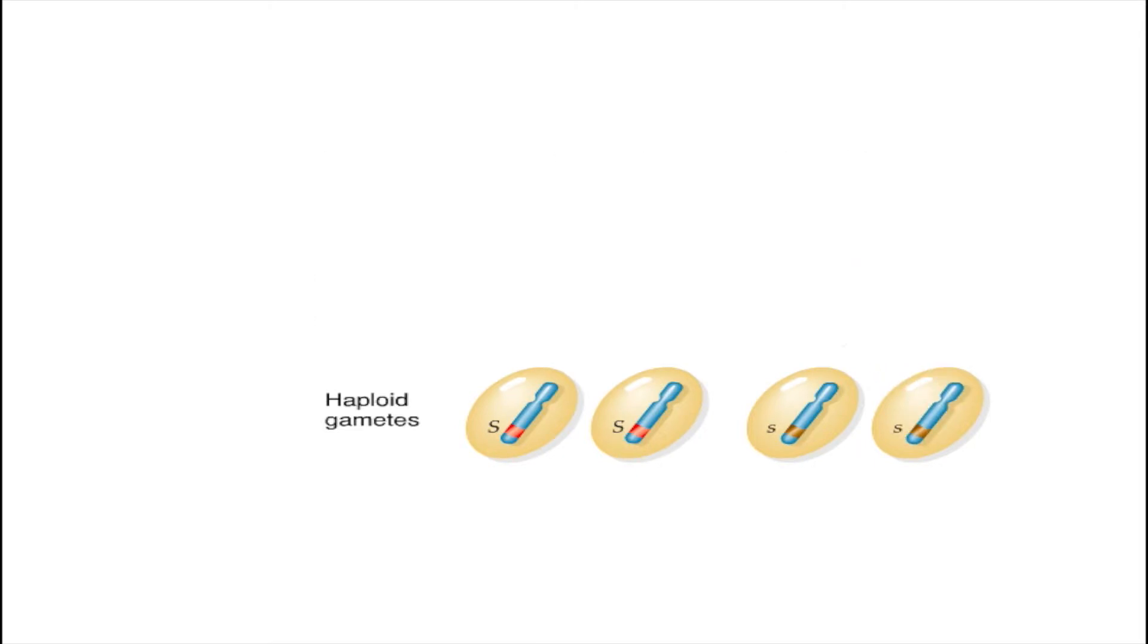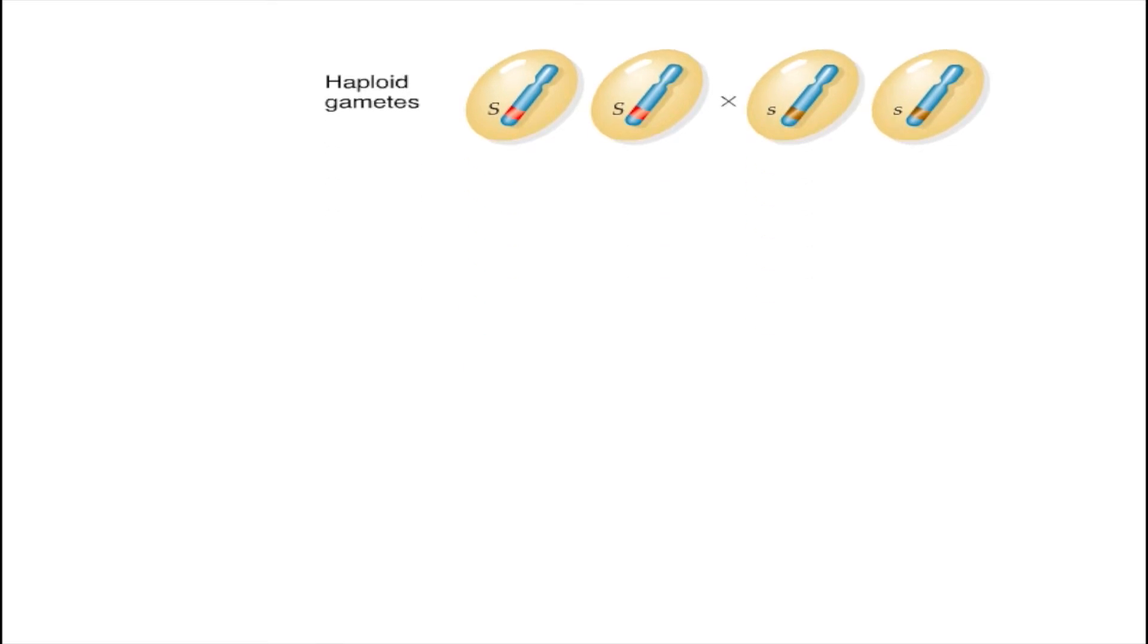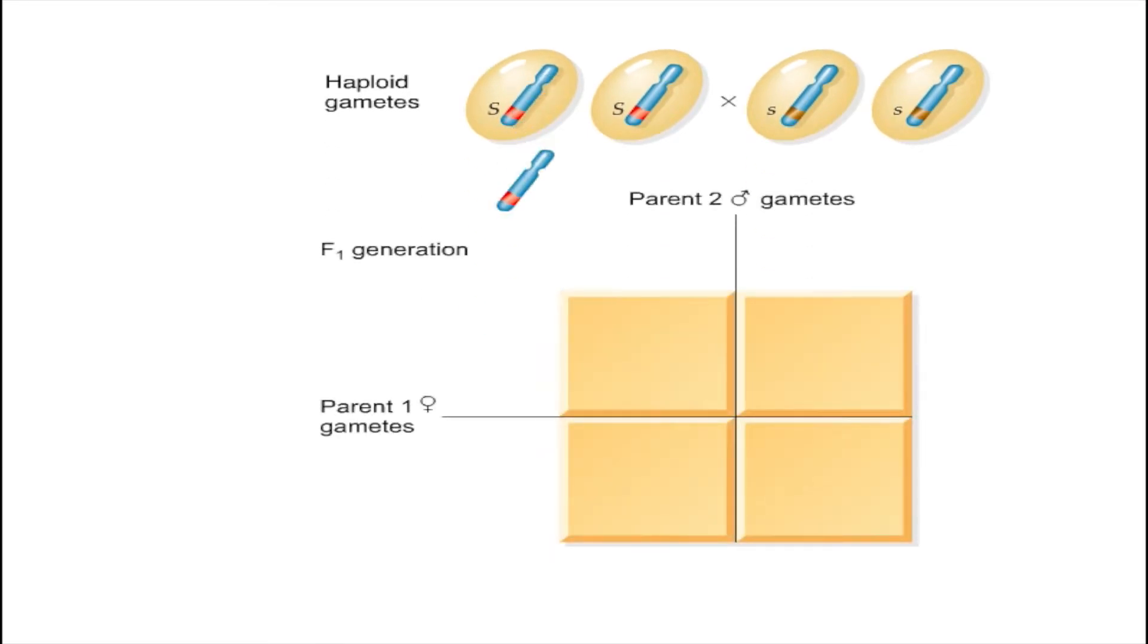In a monohybrid cross, the parental, true breeding plants produce sex cells, or gametes, of each type. When the gametes unite, the resulting F1 generation has both types of factors.